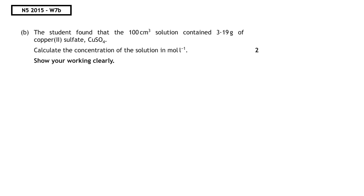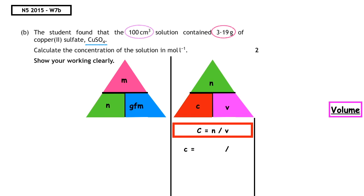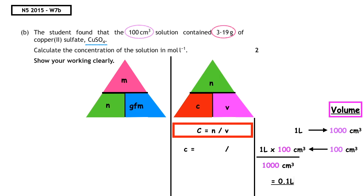This question is from the National 5 2015 written paper, question 7b. A student found that a 100 centimeters cubed solution contained 3.19 grams of copper(II) sulfate — formula CuSO₄. Calculate the concentration of the solution in moles per liter. Show your working clearly. We draw both triangles — 'my nice granny never cuts violets'. The question wants us to calculate the concentration, so we write c = n ÷ v. The volume of 100 centimeters cubed must be converted: one times 100 divided by 1000 gives us 0.1 liters.